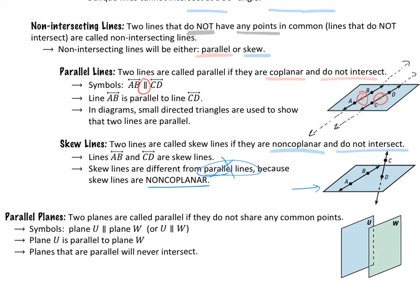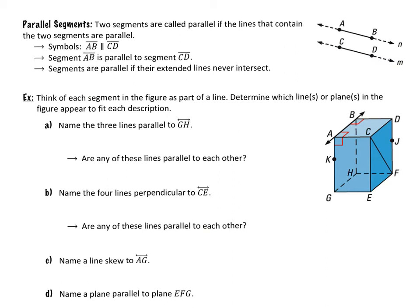We also talk about parallel planes. Just as two lines are parallel if they are coplanar and do not intersect, two planes can be called parallel planes if they do not share any common points. We use the same parallel symbol, naming planes with a single capital letter or the word 'plane.' Parallel planes never intersect — they extend to infinity in two dimensions.